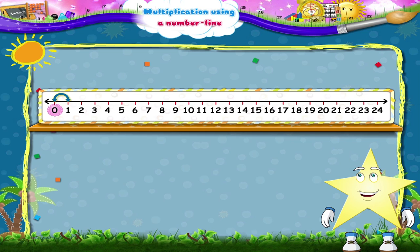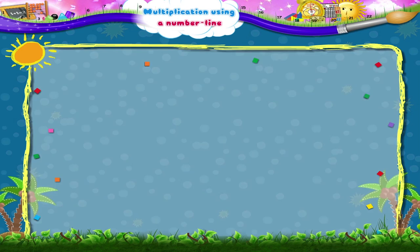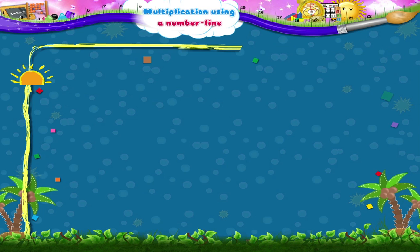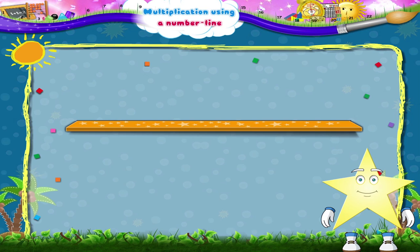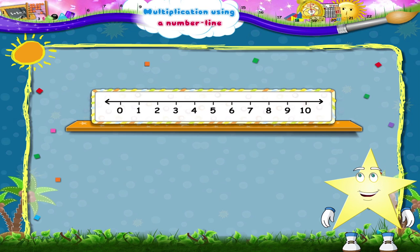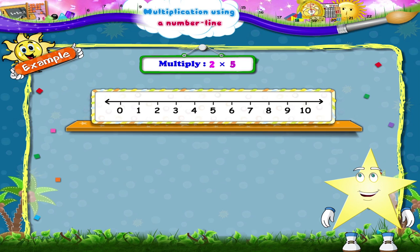The distance between one number to the next is generally considered as one unit. Here, let me stick the first strip. Now Starry, we are going to solve some multiplication examples using this strip. Consider the example two multiplied by five.